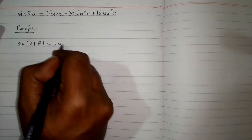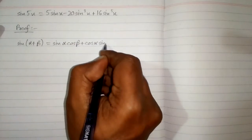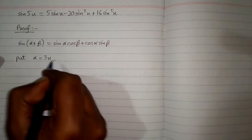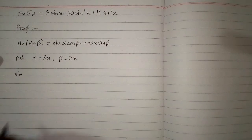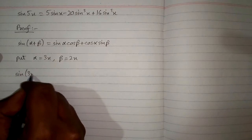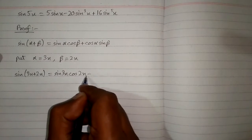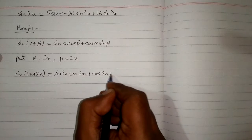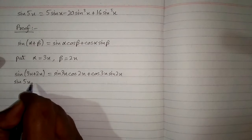In order to prove this identity we will use the formula: sine(alpha + beta) = sine alpha cos beta + cos alpha sine beta. We put 3x in place of alpha and 2x in place of beta, so we have sine(3x + 2x) = sine 3x cos 2x + cos 3x sine 2x.